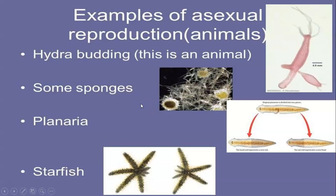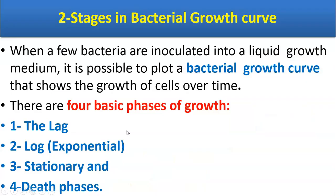Some examples of asexual reproduction in animals include Hydra by budding, sponges, Planaria, and starfish. This covers the basic concept of microbial growth, binary fission, and generation time. In the next lecture we will study about the stages in the bacterial growth curve. If you have not subscribed Microbiology by Santosh Napte, kindly subscribe this channel. Thank you.